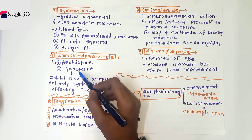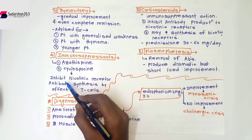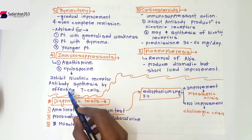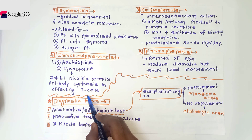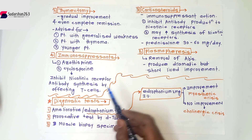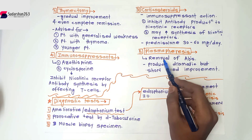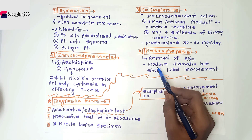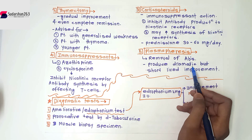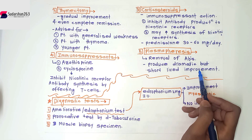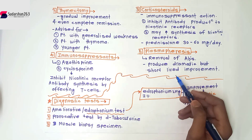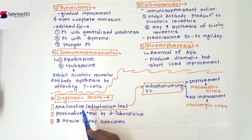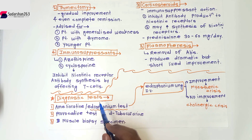Fourth are immunosuppressants like azathioprine and cyclosporine. They inhibit nicotinic receptor antibody synthesis by affecting T cells (T lymphocytes). Fifth is plasma pheresis, which is the removal of antibodies. It produces dramatic but short-lived improvement because after some time new antibodies also form.